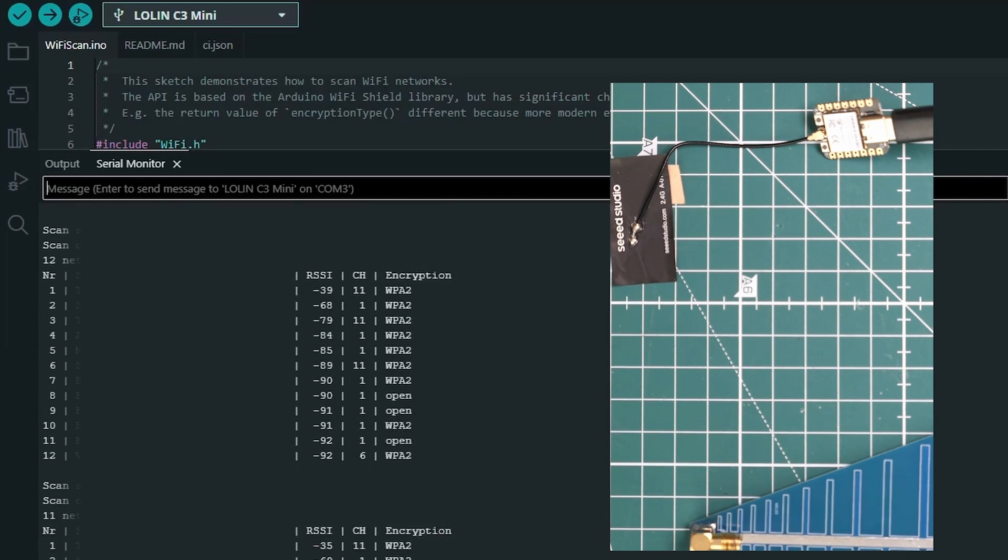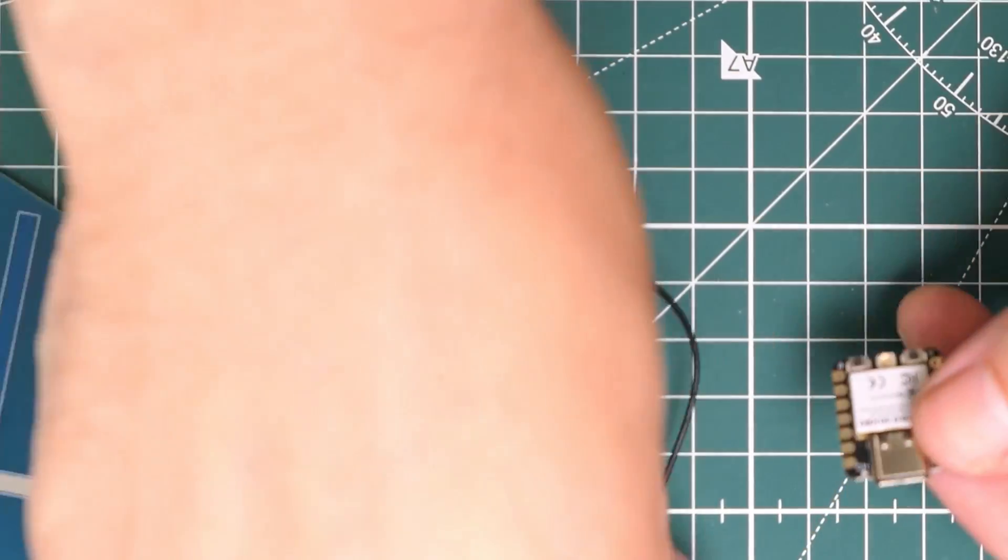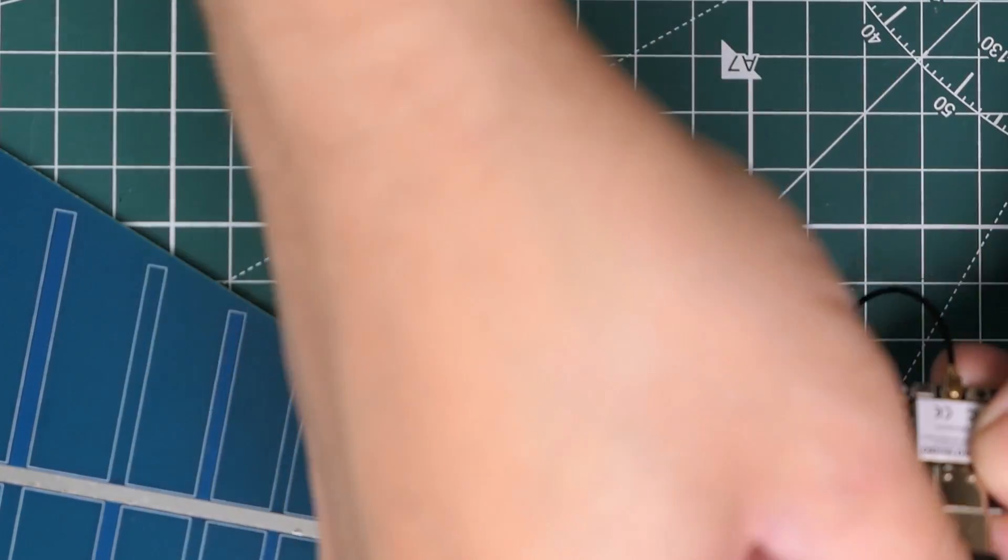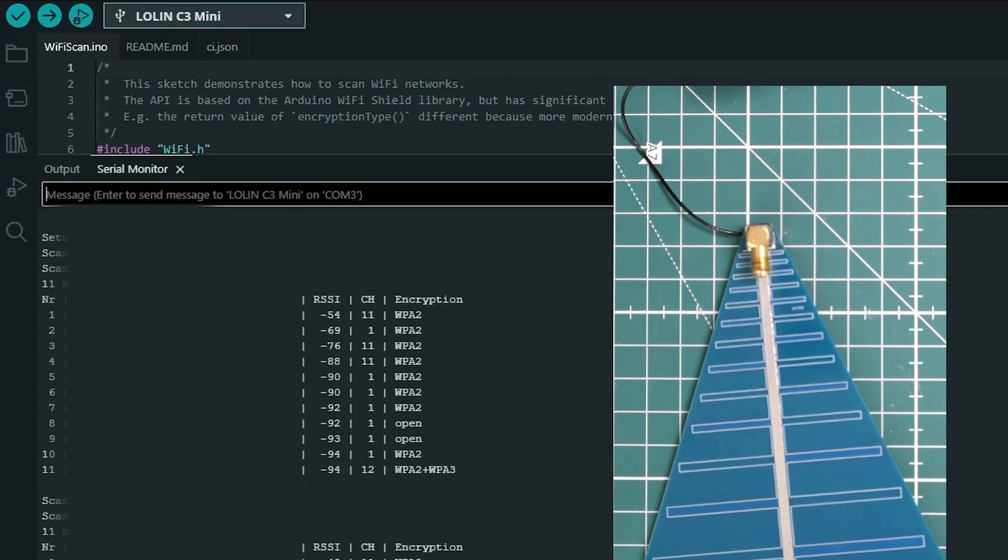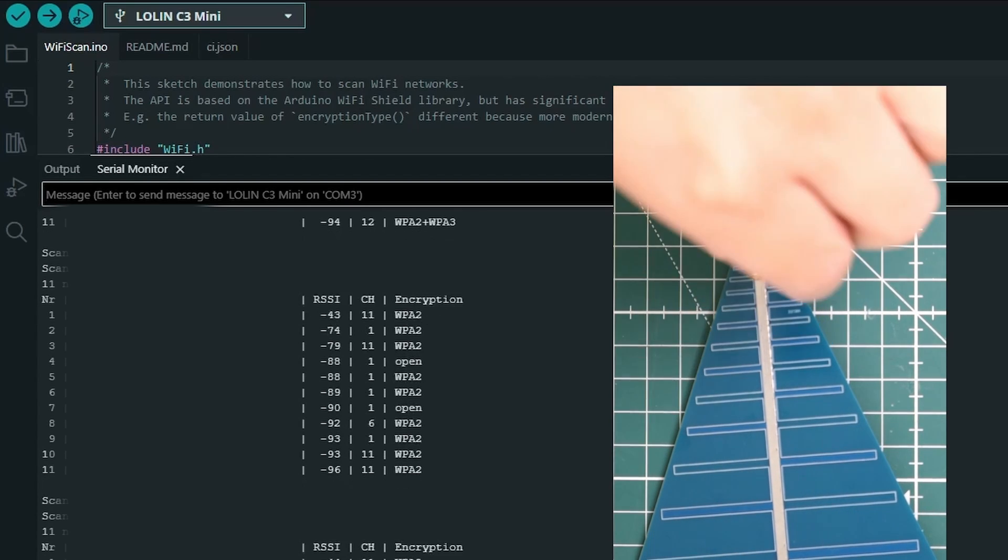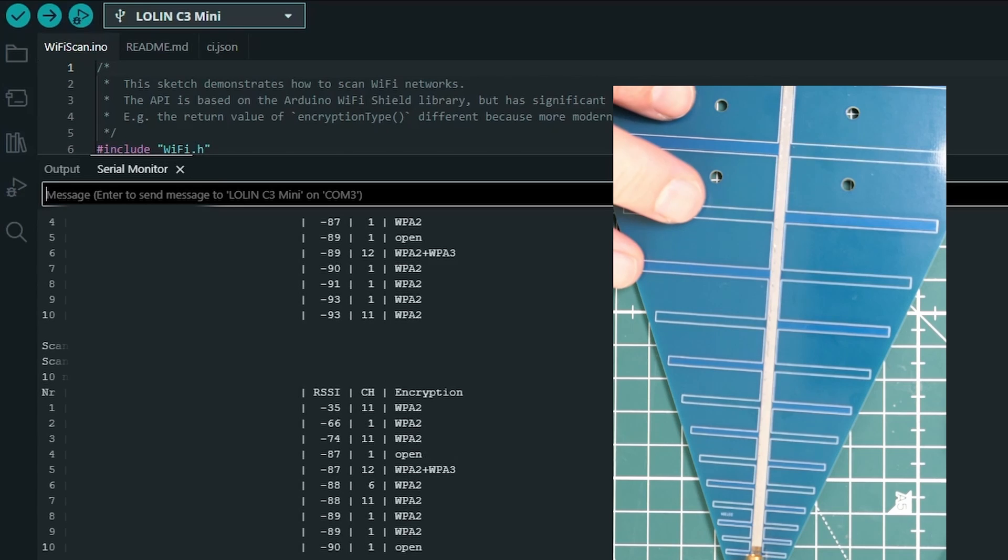Now I'm going to connect this directional antenna. Now let's have a look. You can see it's actually less good. It's made it worse. Let's just check the directionality of this. Well, there you go.